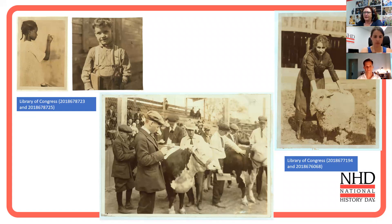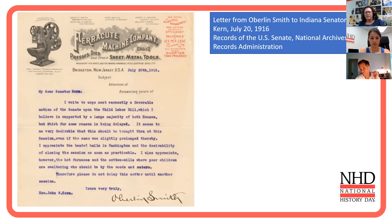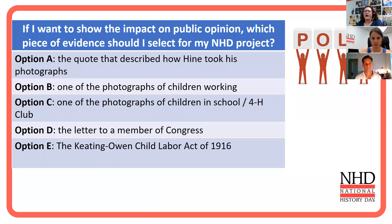I did a little more digging in the National Archives and found a letter from a man named Oberlin Smith to Indiana Senator John W. Kern, written in July 1916. It has letterhead from the Ferrachute Machine Company in Bridgeport, New Jersey, and it's asking the senator to vote for the child labor bill — what becomes the Keating-Owen Act — basically supporting it and saying these conditions are a problem and we need to do something about it. Then the last thing I found was the actual law itself — a great primary source if I want to talk about its passage.